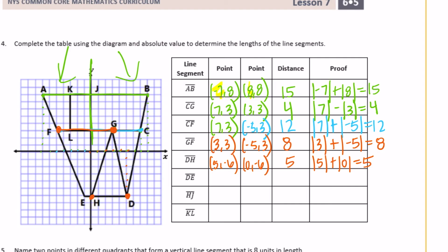Segment DE: D was at 5, negative 6 and E is at negative 1, negative 6. They differ in their x-coordinates — one is positive, one is negative — so they're on opposite sides and we add. The distance is 6.